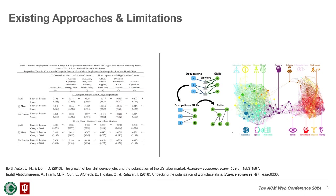Unfortunately, there is no systematic method to map different types of labor market data. Both studies have specialized in labor market phenomena, but also have limitations in capturing the interaction between units.